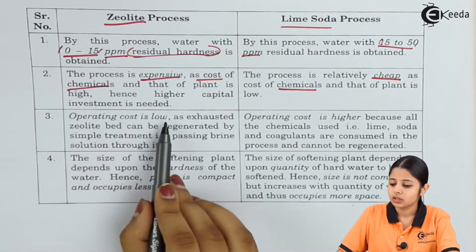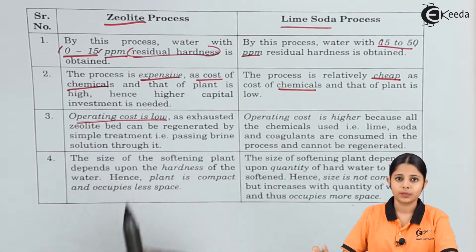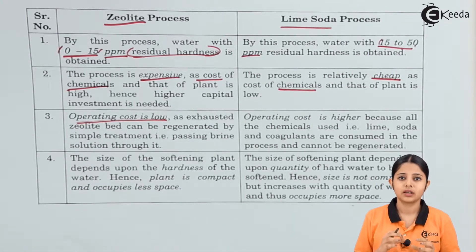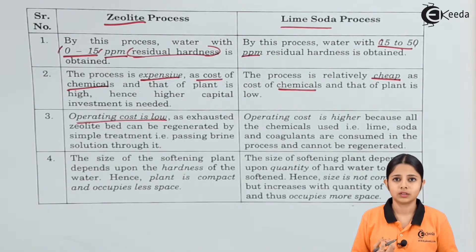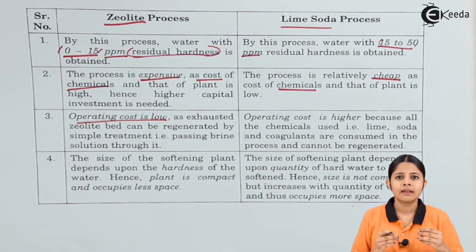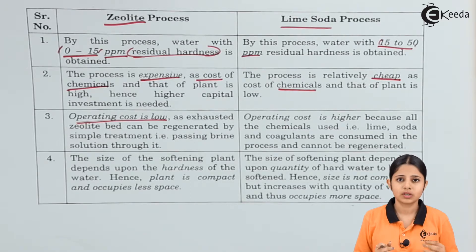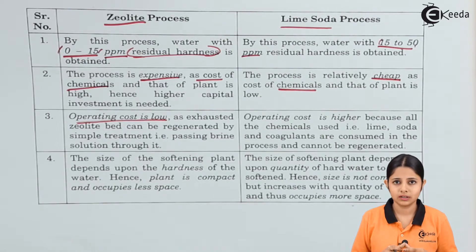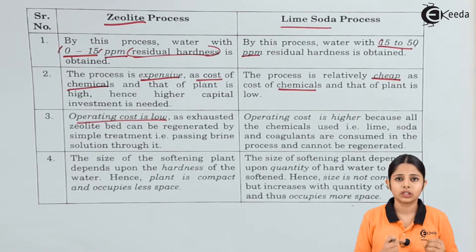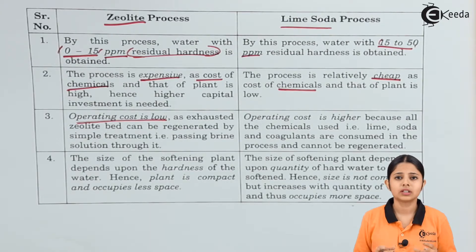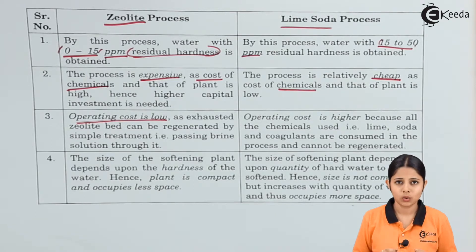Point three: the operating cost for the zeolite process is low. Operating cost refers to the cost of maintaining and monitoring the plant after it is set up. The process is continuous — batches of hard water are fed into the plant, chemicals react with impurities, precipitates form and are filtered out, and soft water is obtained. Maintaining and monitoring this ongoing process constitutes the operating cost.